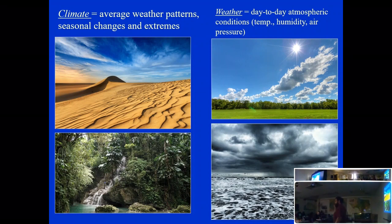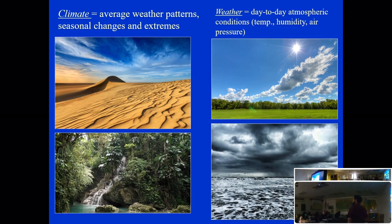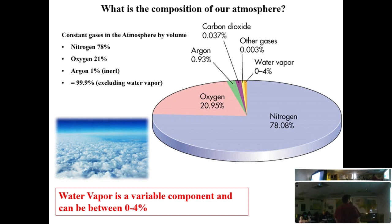All weather occurs in the atmosphere. What's the difference between weather and climate? Weather is the normal day-to-day processes — sunny, cloudy, raining today. Climate is those long-term weather patterns, so a place might always be dry, or always wet, or always hot, or always cold.